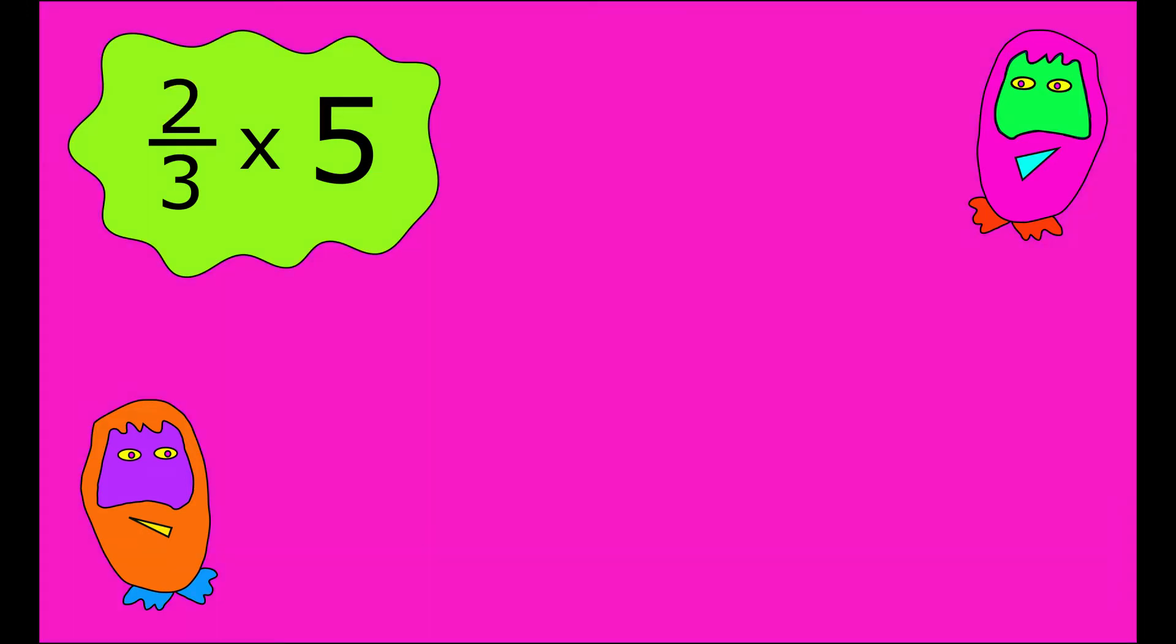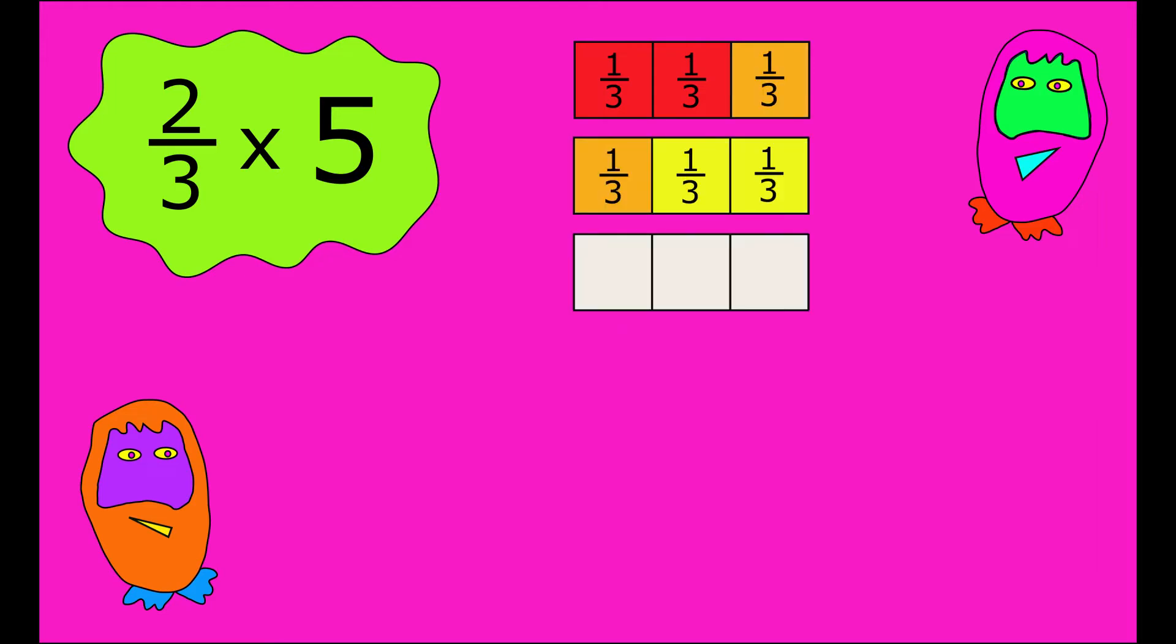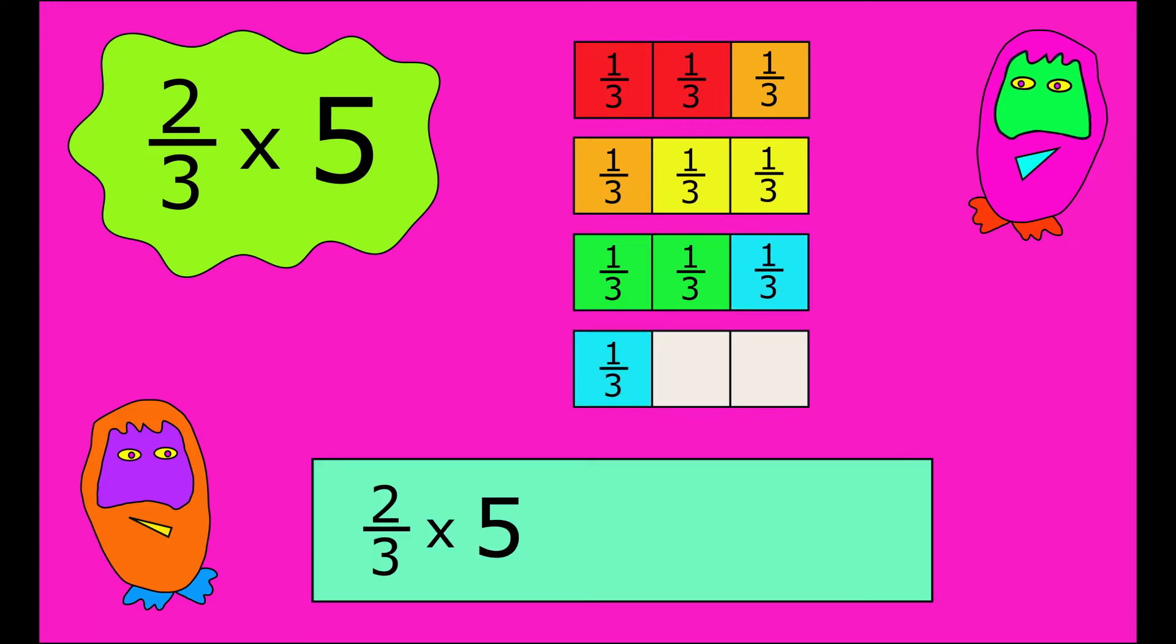Let's take a look at two-thirds multiplied by five. And what you can see is happening is I'm starting to add on two-thirds, two-thirds. I'm going to keep going until I've done that five times. Two-thirds multiplied by five gives me a total of ten-thirds, or if you like, three wholes and one-third.